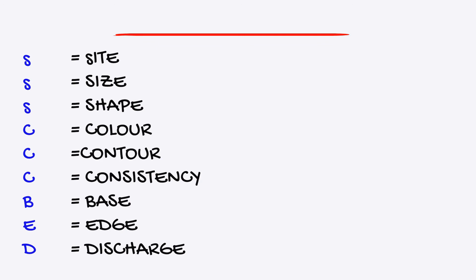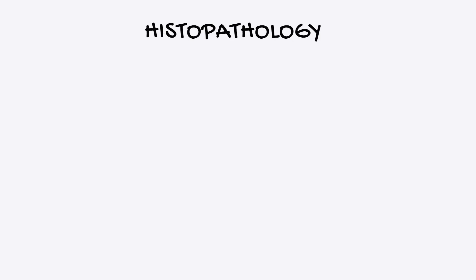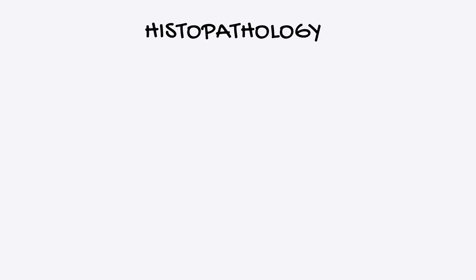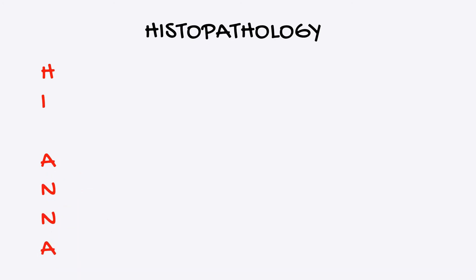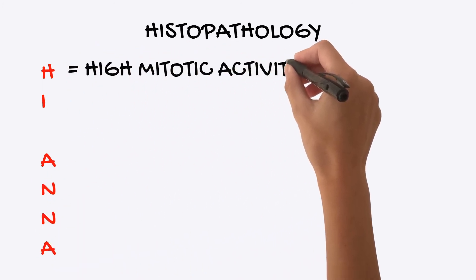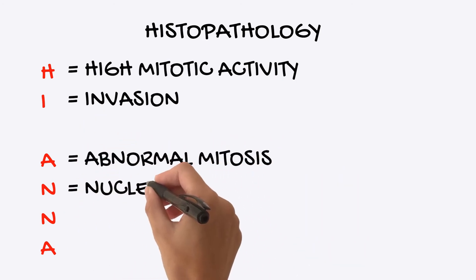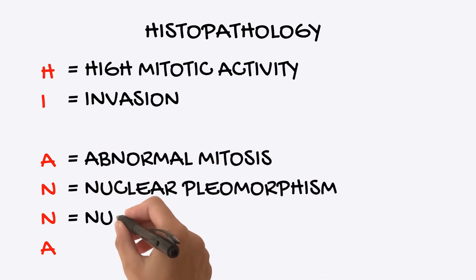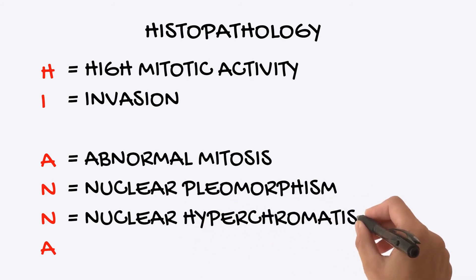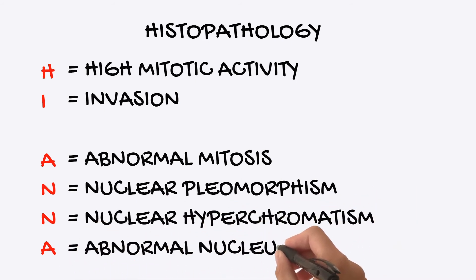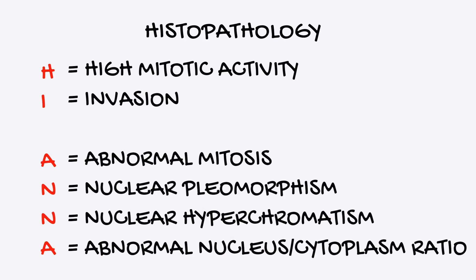For the histopathology of oral cancer, remember the mnemonic HIANA. H equals high mitotic activity. I equals invasion into the underlying connective tissue causing an inflammatory response. A equals abnormal mitosis. N equals nuclear pleomorphism. N equals nuclear hyperchromatism. And A equals abnormal nuclear-cytoplasm ratio.